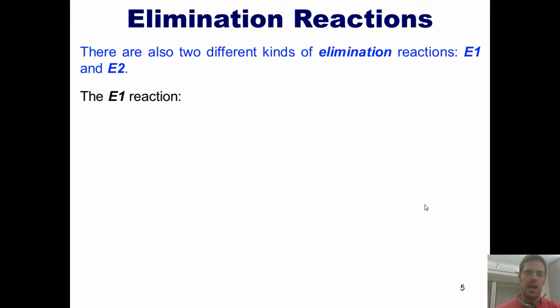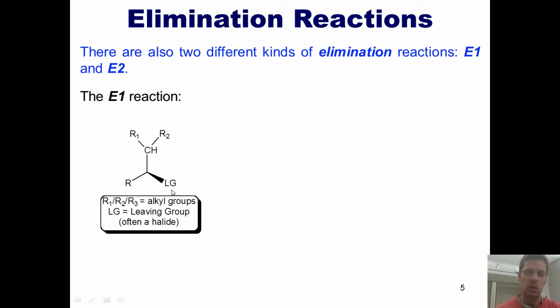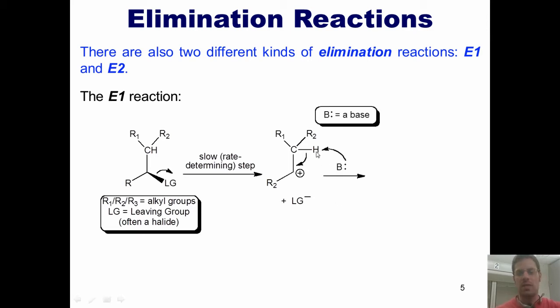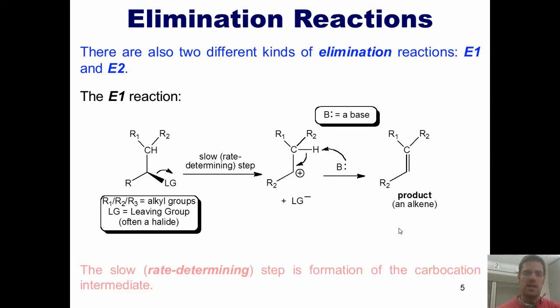Here's the mechanism for the E1 reaction. You have some type of material that has a leaving group, which I've marked LG here. It's typically a group that is stable holding a negative charge, often a halogen like bromine, chlorine, or iodine. What occurs is the leaving group takes off and gives a carbocation intermediate. This is the slow or rate-determining step. Then a base comes in, attacks the hydrogen on the carbon adjacent to the positively charged carbon center, forms a bond with it, and then thrusts these electrons down like a door on a hinge to form an alkene. This is the E1 reaction mechanism. Please note once again that the slow or rate-determining step is forming the carbocation intermediate.